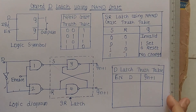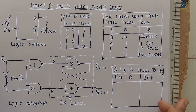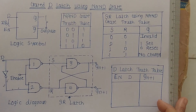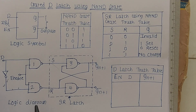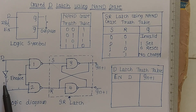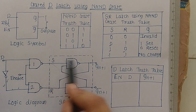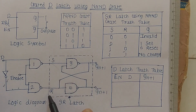Now let us discuss the working of the gated D latch using NAND gates. Four NAND gates are required to construct the gated D latch, and one NOT gate is required to invert the D input. The enable input is given to both NAND gates, and this inner circuit is an SR latch.